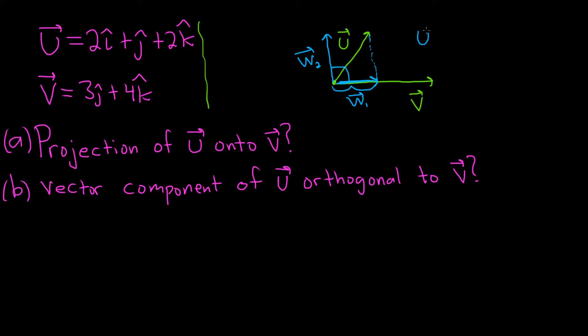Notice that u, via vector addition, equals w1 plus w2. We're going to use this formula to do part b. Once we have part a, which is w1, you can solve for w2 by subtracting w1. So w2 equals u minus w1. Really beautiful stuff.